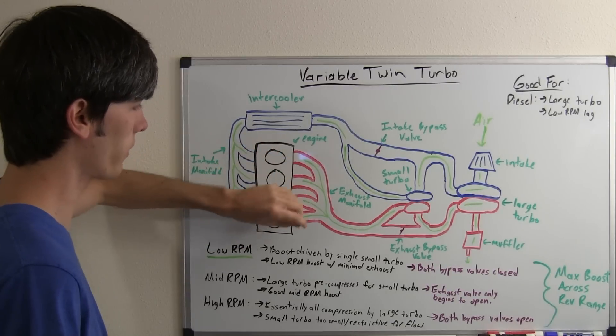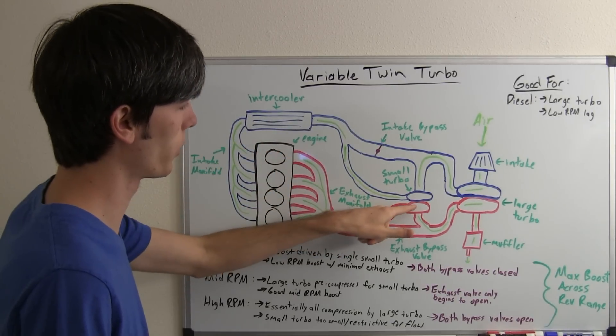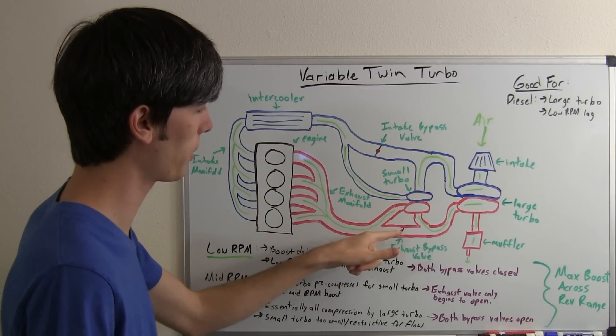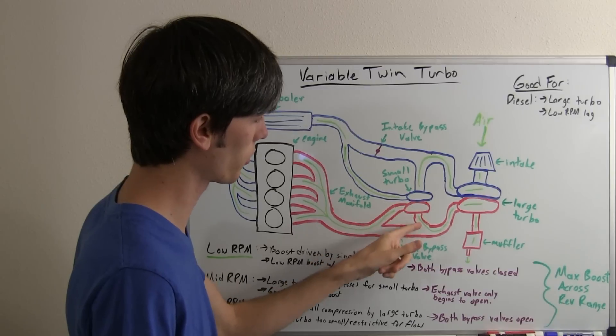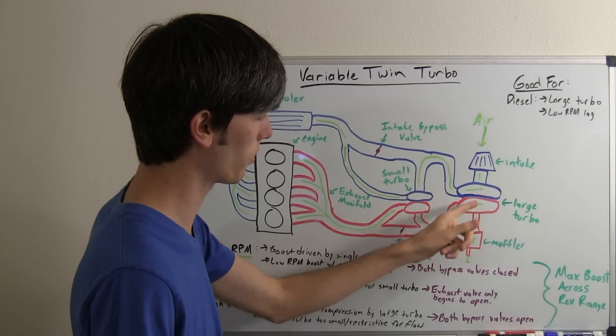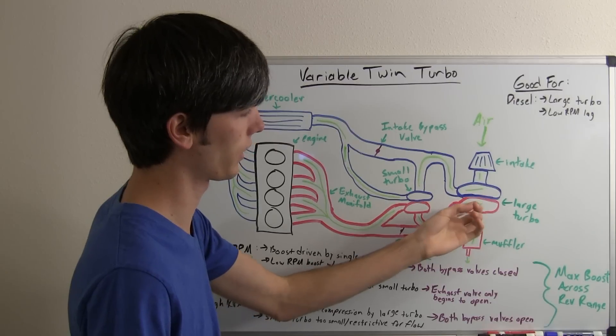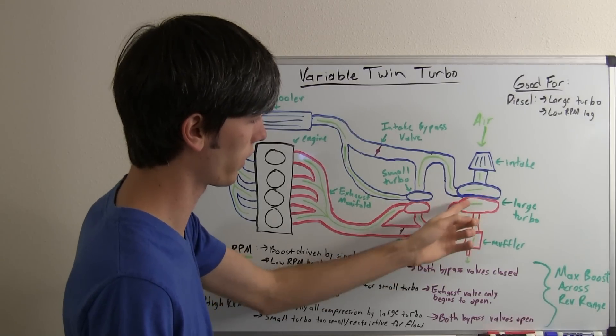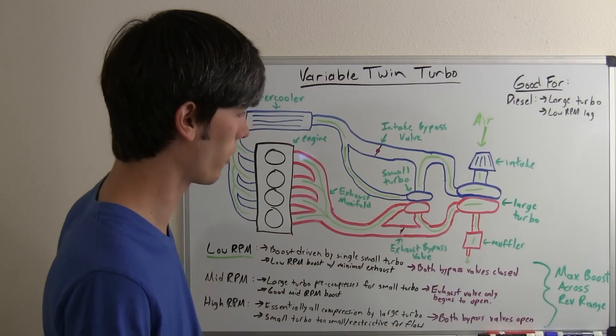Once the exhaust comes out of the engine it's forced to go through this small turbo because this exhaust bypass valve is closed. So it comes through the small turbo then it goes through the larger turbo and it's not enough exhaust to spool it up so it really isn't doing anything but just going through it and then out your muffler.